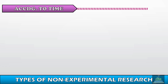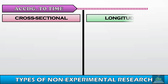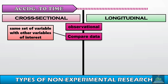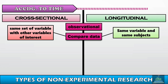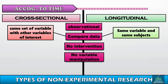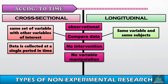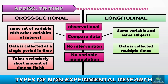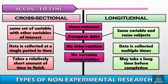Now let's discuss the similarities and differences between cross-sectional and longitudinal research. Both are observational in nature and both compare data. Both also have no intervention and no variable manipulation. In terms of differences, cross-sectional research collects data at a single period in time, while longitudinal research collects data at multiple times. Additionally, cross-sectional research takes a relatively short time to complete, whereas longitudinal research may take a long time before completion.